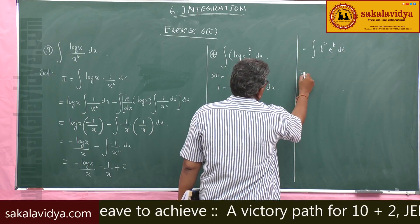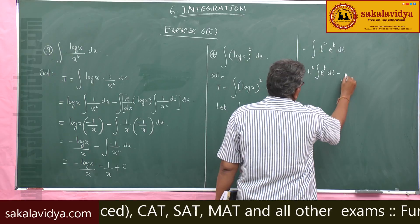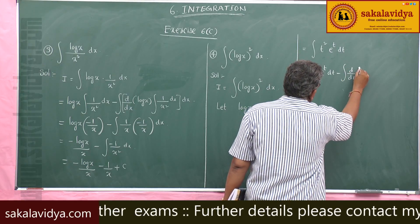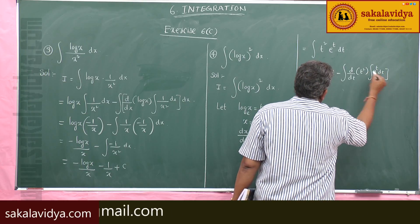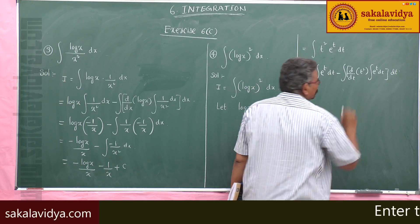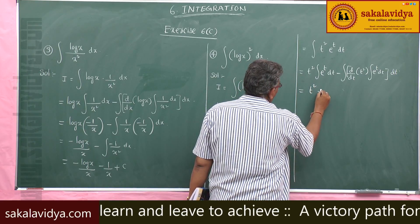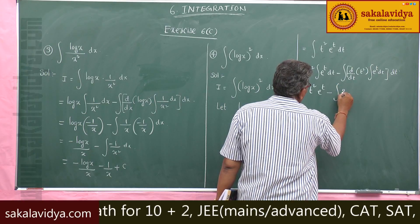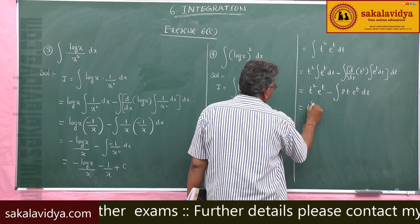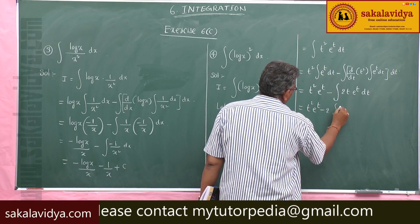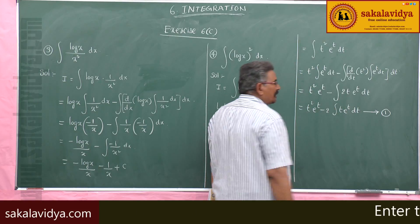Now applying integration by parts with t² as the first function: t²·∫eᵗ dt minus ∫(d/dt of t²)·(∫eᵗ dt) dt. This gives t²·eᵗ minus ∫2t·eᵗ dt. Call this equation 1, since we need to apply integration by parts again to the remaining integral.